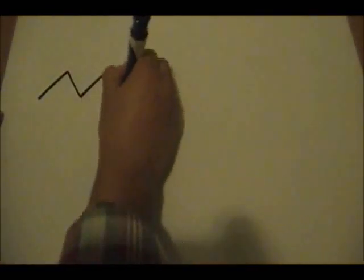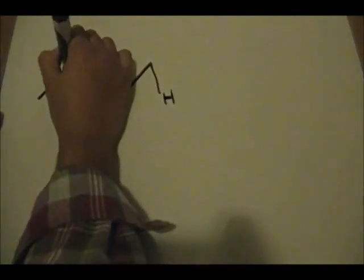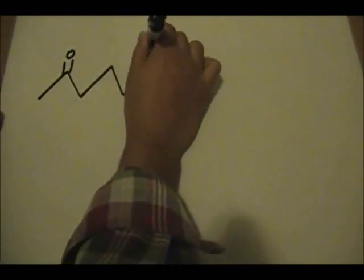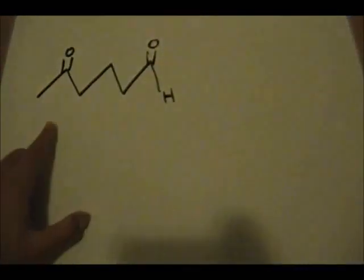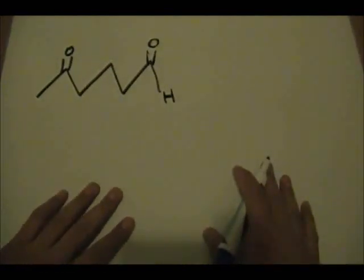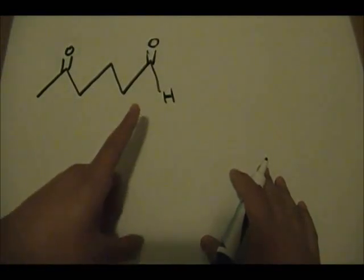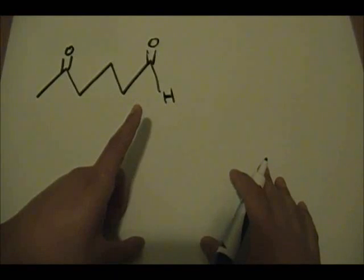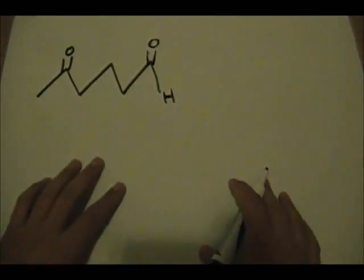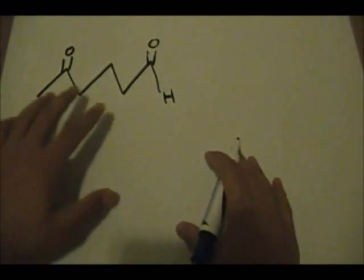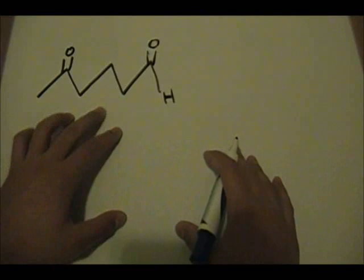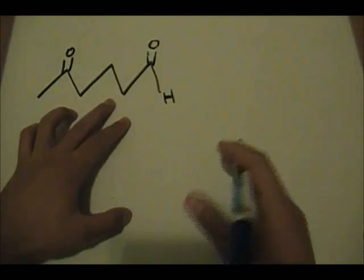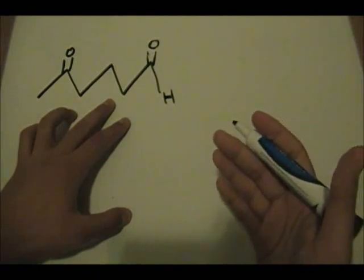Let's make up a scenario: we're in a laboratory and we want to perform a Grignard reaction. We're starting off with this molecule here, which has a ketone and an aldehyde. We want to perform a Grignard reaction with the ketone only — we want to keep the aldehyde the same and leave it unchanged. But if we perform a Grignard reaction with this starting material, both functional groups will change.